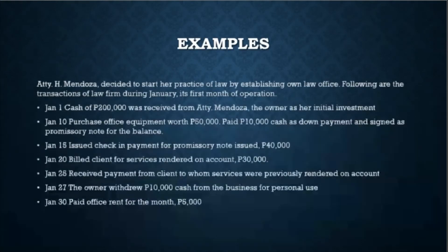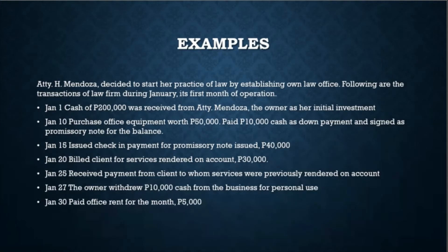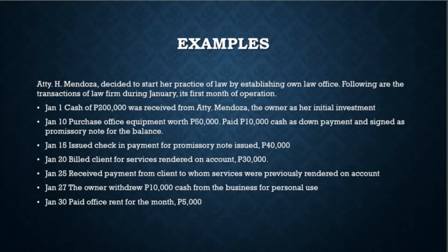To illustrate the rules of debit and credit, here is an example. Attorney H. Mendoza decided to start her practice of law by establishing her own law office. The following are the transactions of the law firm during January, its first month of operations: January 1 — cash of $200,000 received from Attorney Mendoza as initial investment; January 10 — purchased office equipment worth $50,000, paid $10,000 cash as down payment and signed a promissory note for the balance; January 15 — issued a check in payment for the promissory note amounting to $40,000; January 20 — billed client for services rendered on account amounting to $30,000; January 25 — received payment from client for services previously rendered on account; January 27 — the owner withdrew $10,000 cash from the business for personal use; January 30 — paid office rent for the month amounting to $5,000.